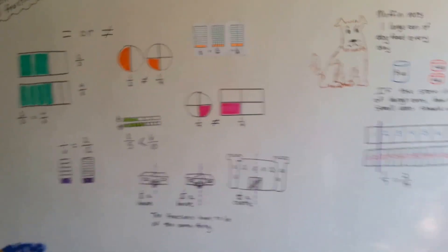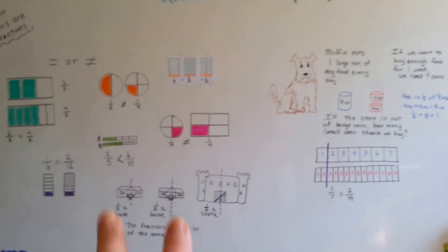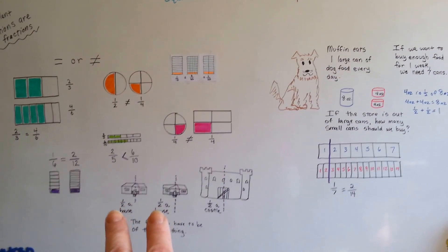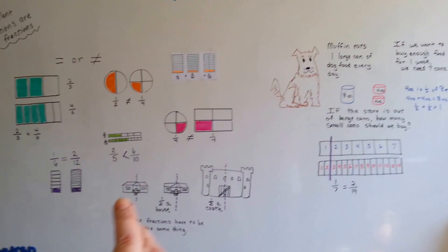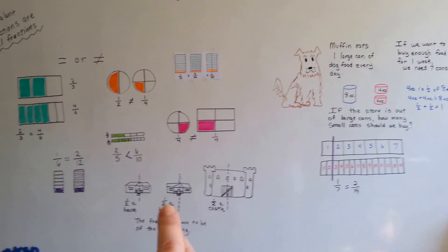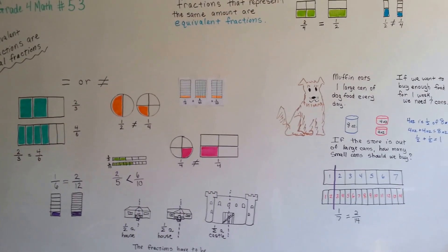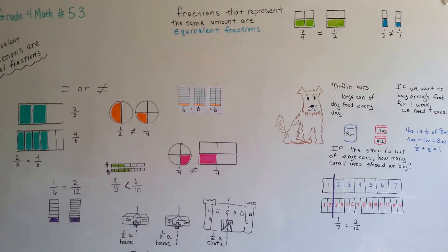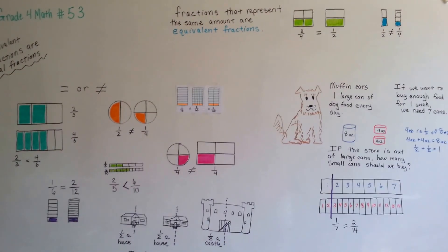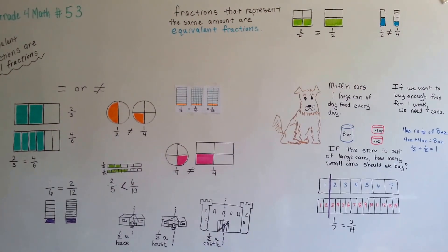So, equivalent fractions have to be, you have to start with the same thing in order for the fractions to be the same. Half of this house is equal to half of that house. But half of that house is not equal to half of that castle. We're going to keep talking about fractions and how they can be equal, and I'll see you next video. Bye.